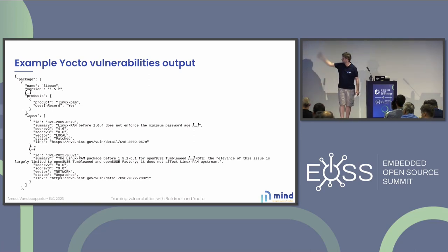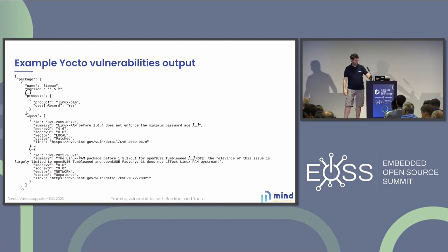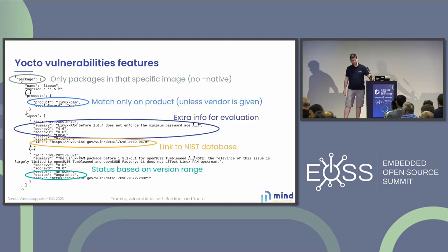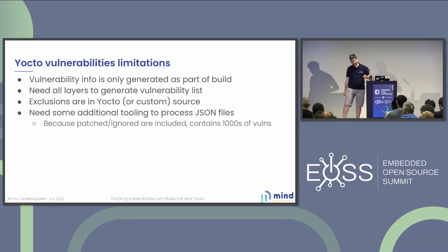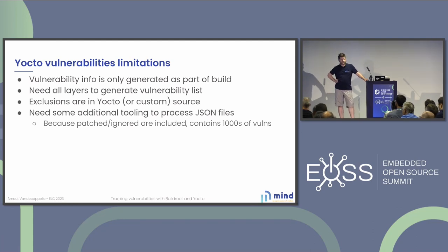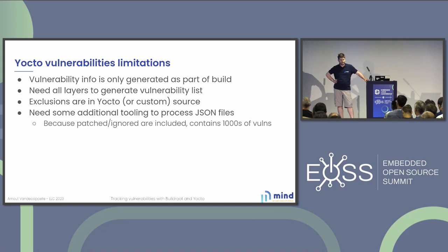For Linux, we have a thousand CVEs. The limitations are mostly the same as BuildRoot's for the same reason — it was created mostly for maintainers and less so for a user that wants to track after release. What is a bit worse is that vulnerabilities are generated as part of the build, so you really have to do a full build to get a vulnerability list. You need all the layers again, and the exclusions are in the source code again. Compared to BuildRoot, you do have the vulnerability score, and because version matching is not done with the CPE database it's actually a little simpler.